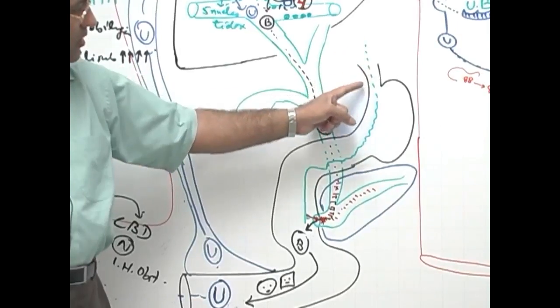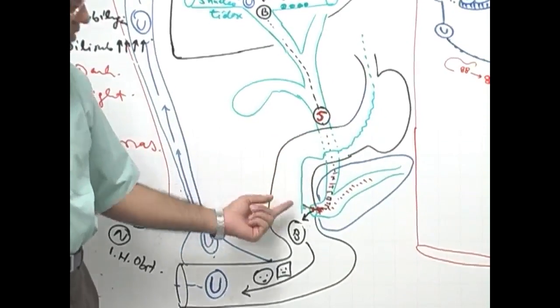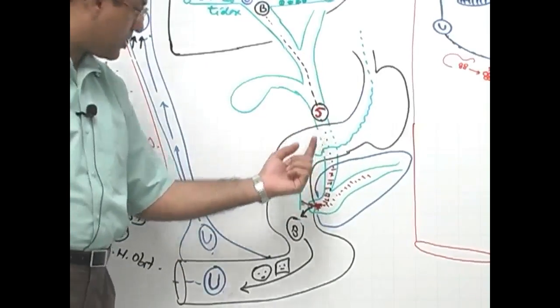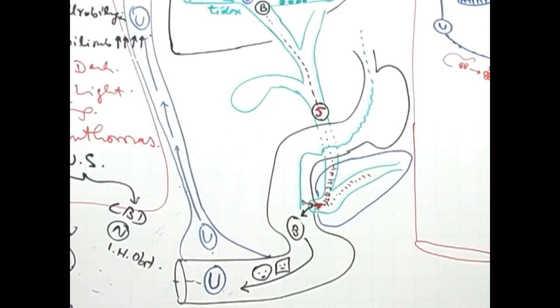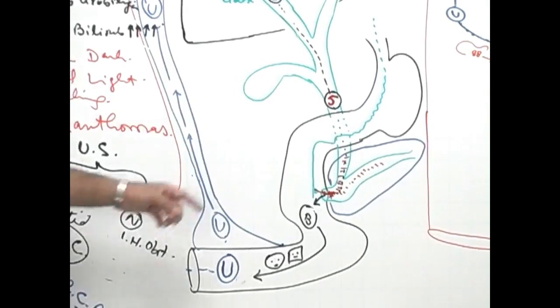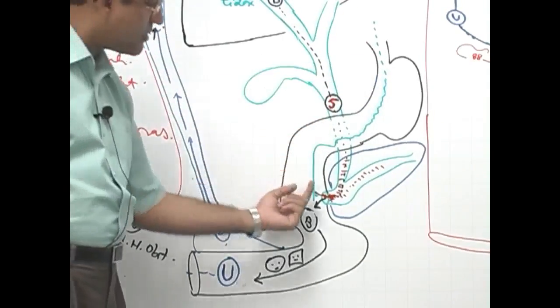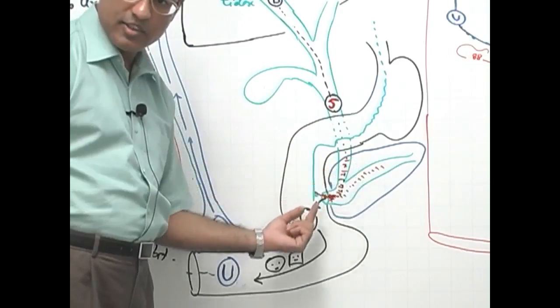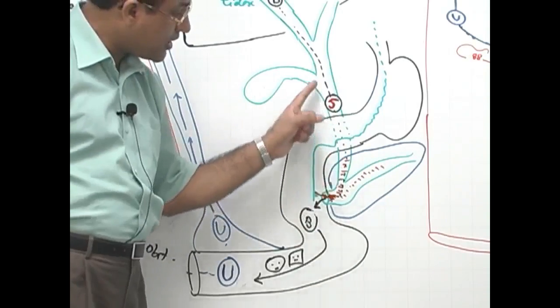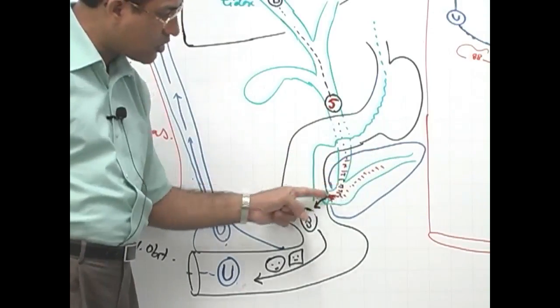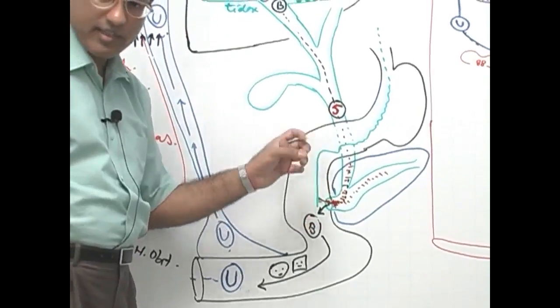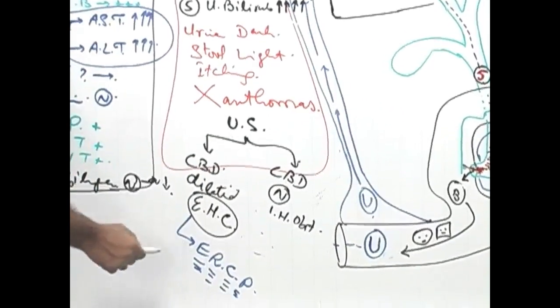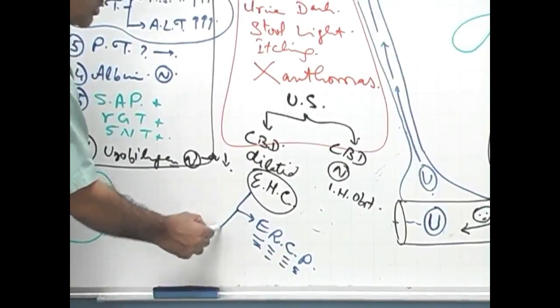We call it ERCP. Endoscopic retrograde - we are going retrograde. This is going retrograde. Endoscopic retrograde cholangio-pancreatography. Endoscopic, then retrograde. It's going in retrograde fashion, pushing the dye in retrograde fashion. Cholangio-pancreatography.